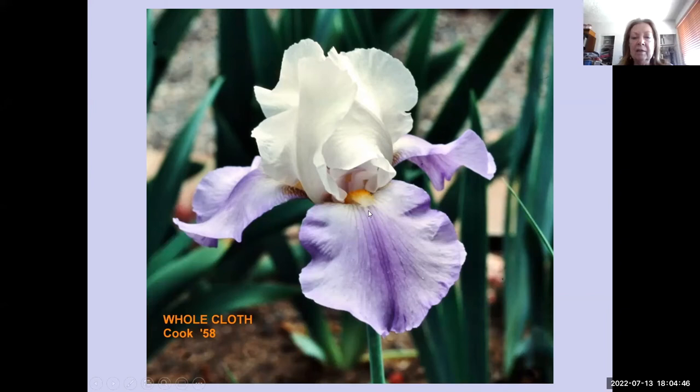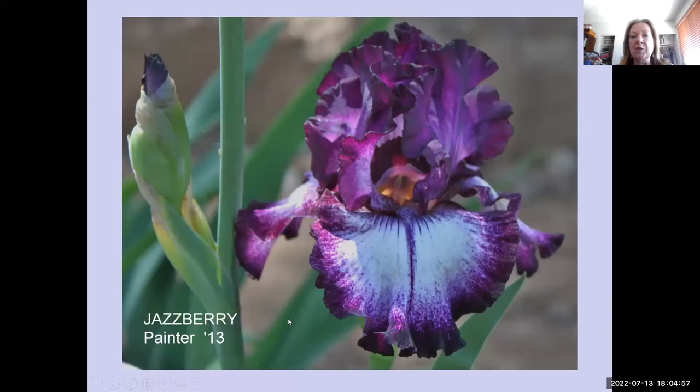The center stripe can be a darker or a lighter stripe of color — the stripe is a different color from the ground. The question becomes: when does a stripe become a wash or a waterfall? Whole Cloth, a 1958 Dykes Medal winner by Cook, shows a center stripe not as delineated as on some iris — it's going into the wash area, but still has a distinctive darker line down the falls. Jazzberry by the Painters shows a more distinct center line from the beard down to the end of the falls.